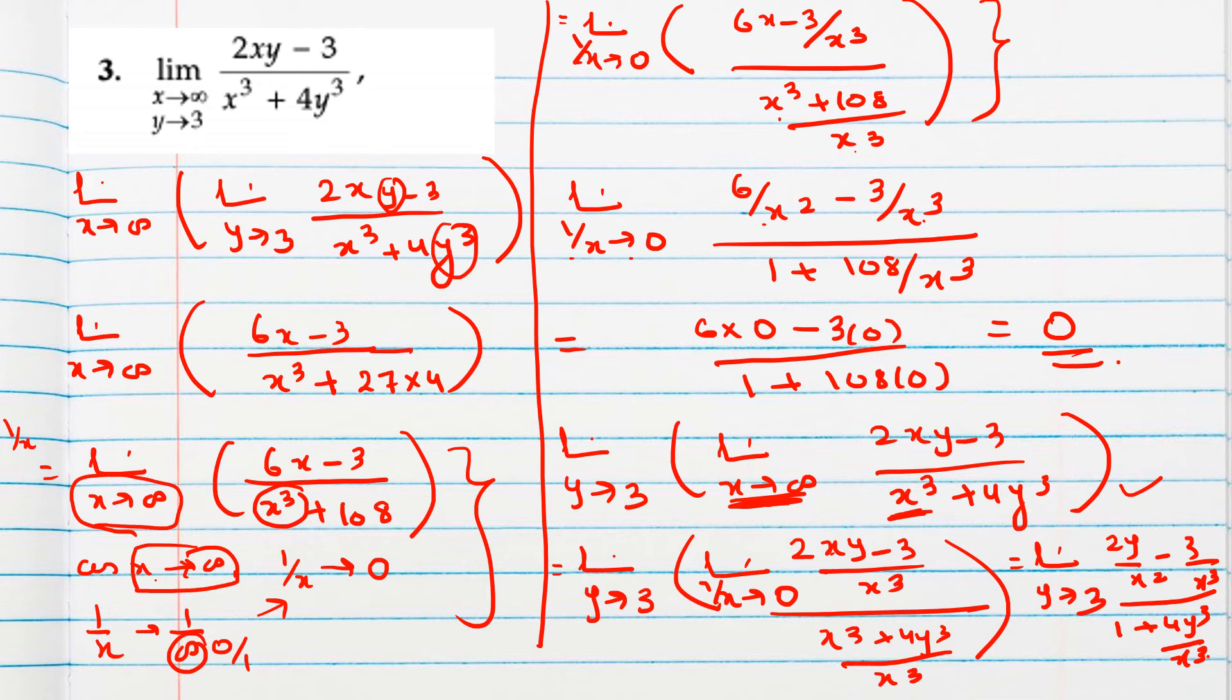So here limit 1 by x tends to 0 is also there. So now when you apply 1 by x tends to 0, every term will become 0 except the first term here. You can see, here this term will be 0, this will be 0, this will be 0. So finally you will get limit y tends to 3, 0. So now this function is irrespective of y. Whatever value of y you will put, answer will be 0. So here for this limit also we got 0 for this limit. So final value will be 0.